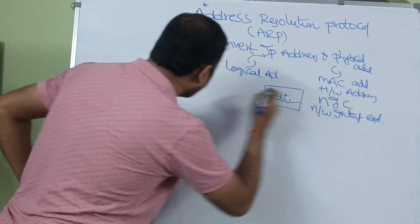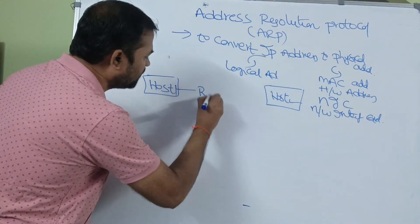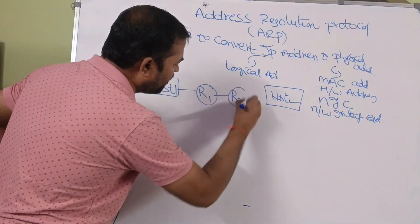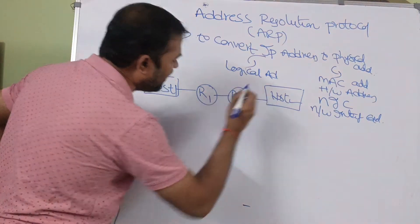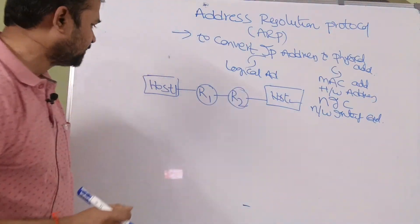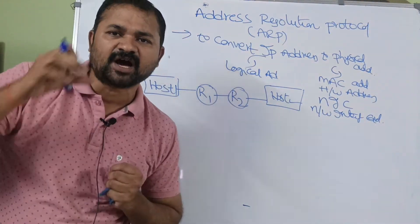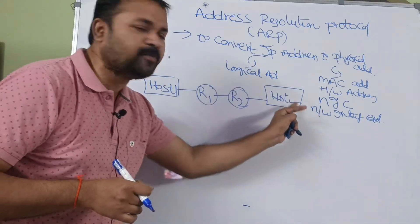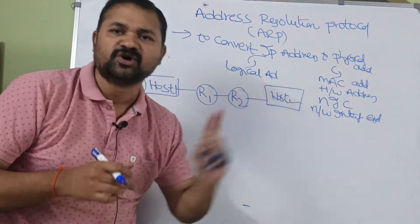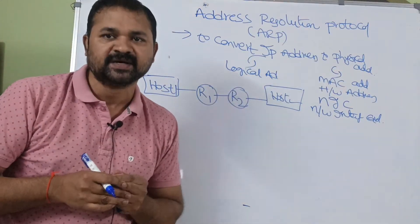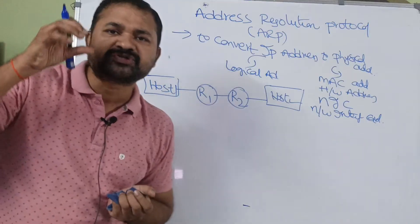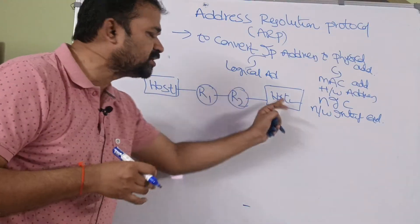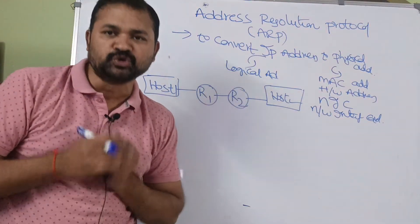In between, let us have two routers — R1 and R2. Our target is for host 1 to send a message to host 2.